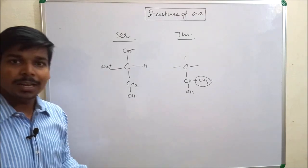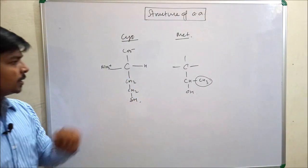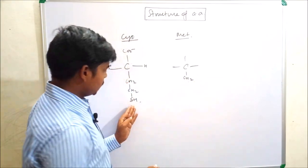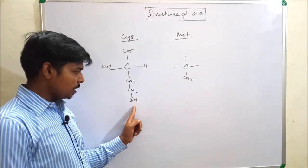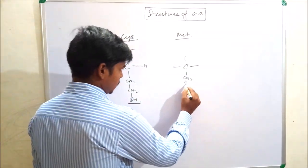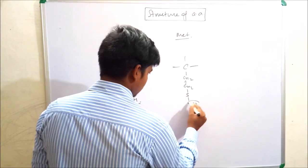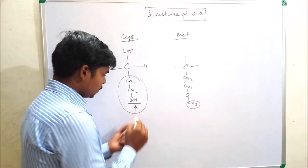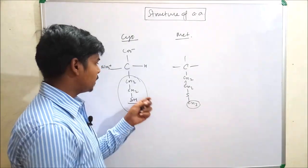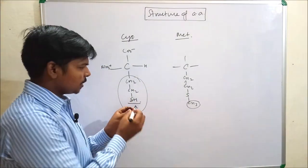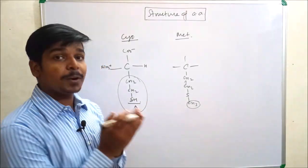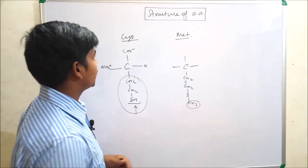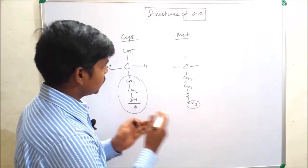For the sulfur-containing amino acids: cysteine has an SH group. It converts into methionine by adding one methyl group to the sulfur — the R group for methionine is CH₂CH₂SCH₃. In the hydroxyl group we add the methyl group to the carbon; here we add it to the SH group. Just little differences in structure. If you remember one structure from any classification, you can draw the others in that group.